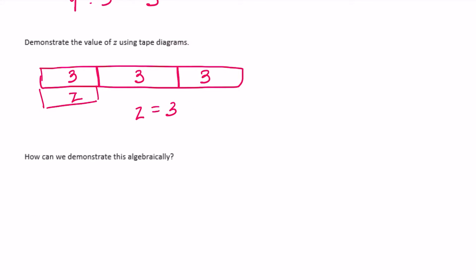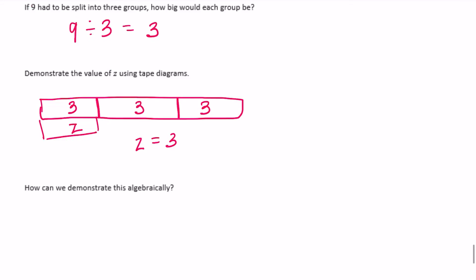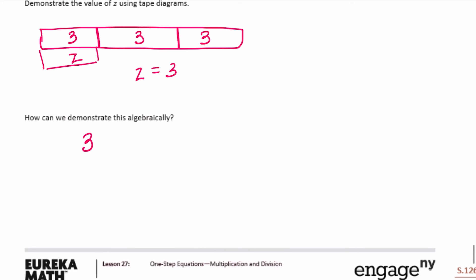How can we demonstrate this algebraically? We know we have to split 9 into three equal groups, so we divide by 3. The equation was 3z equals 9, or 3 times z is equal to 9. Just like with addition and subtraction — where if it was 3z plus 3 equals 7 we'd subtract 3 — the opposite of multiplication is division. So we do 3 times z divided by 3 on the left, and we must do the same on the other side: 9 divided by 3.